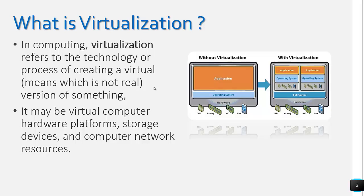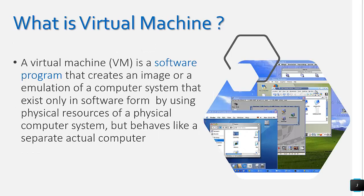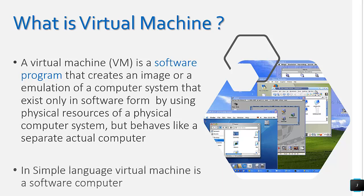As shown in the diagram, when we are not using virtualization there is a single PC using its hardware independently — it has a single operating system and applications. After virtualization, the same hardware is shared by two virtual machines. A virtual machine is a software program that creates an image, or we can say a copy, of a computer system that exists only in software form. In this form it uses the physical resources of the physical computer system.